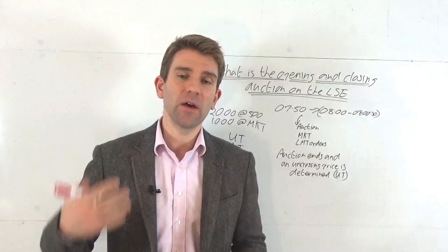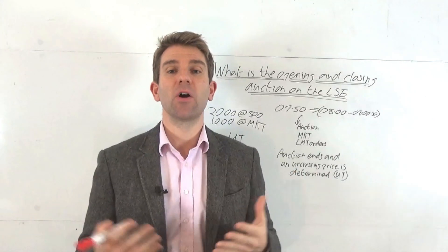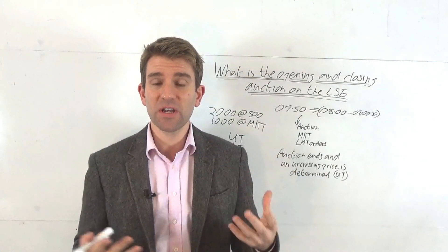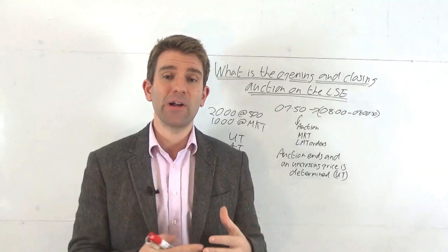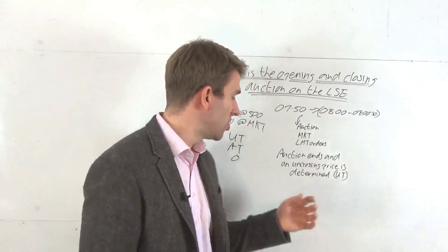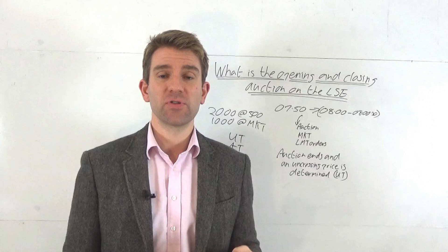You can put in your orders, buyers and sellers are matched, and we get an uncrossing price. Most of the time with the thicker stocks, that's what happens - the orders come in, they're matched, you get an uncrossing price. Again, UT - that's the closing price of the stock.